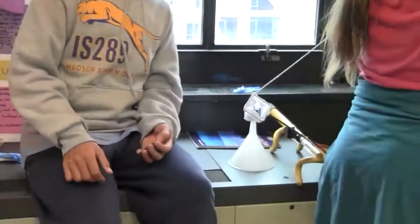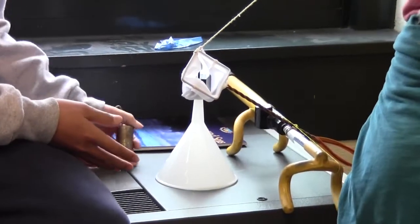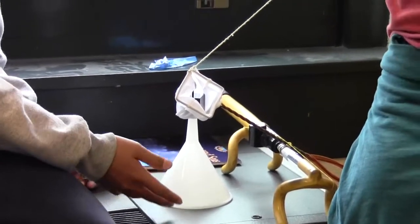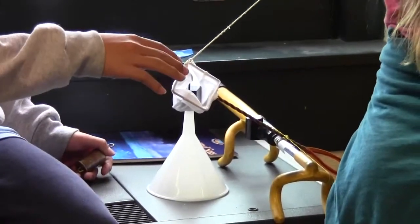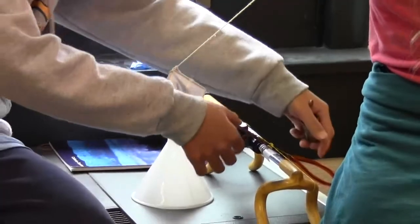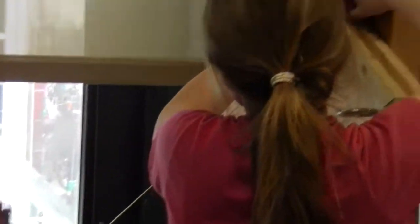Awesome. And so here's the first part of the Rube Goldberg machine. The first step is that Rube Goldberg, aka David, knocks down this funnel, which releases the weight, which puts this up, which pulls the string, and Lucy can explain the rest.